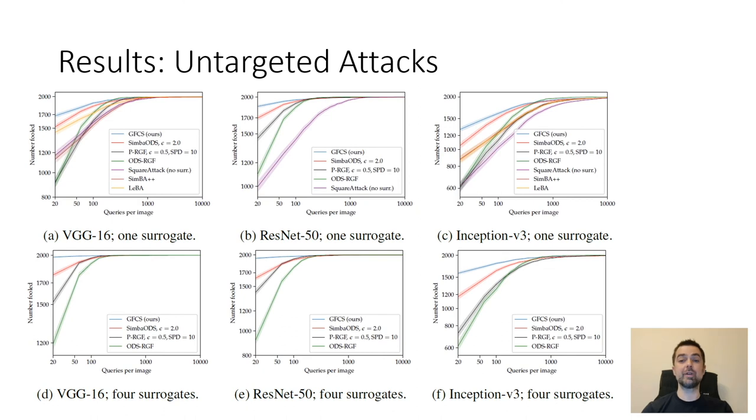So here we have the results for all six target-surrogate pairs and these are for untargeted attacks, which means that the attack is considered to have succeeded if the net outputs anything other than the ground truth class for the given image. Each x-axis, which is log scaled, is the query count and each y-axis is the number of images whose adversary requires no more than that many queries to find. So those are like quasi CDFs. The higher the curve the better the method is, and the blue curves at the top are GFCS.